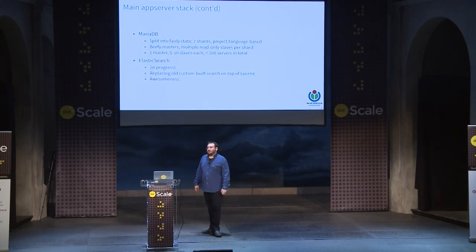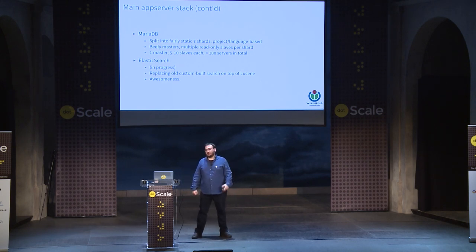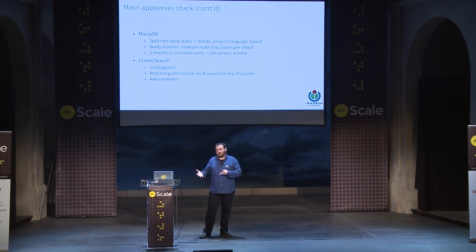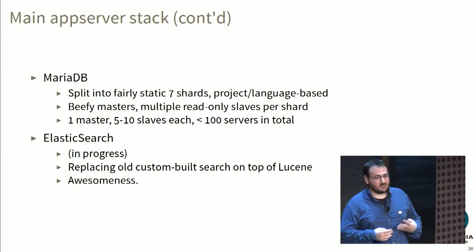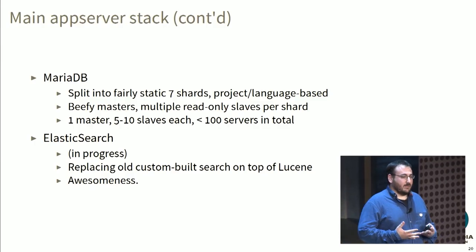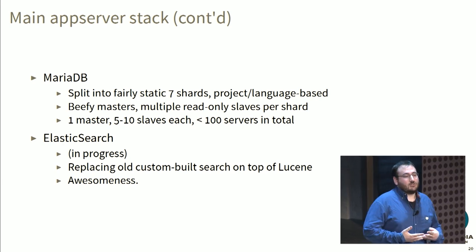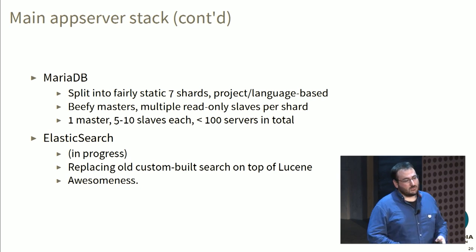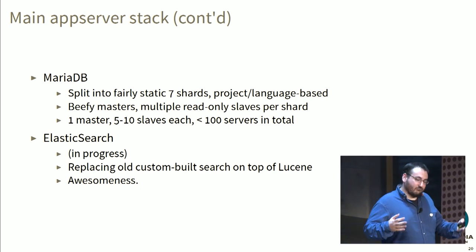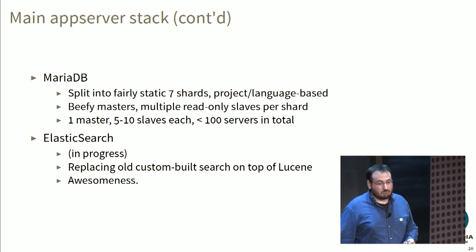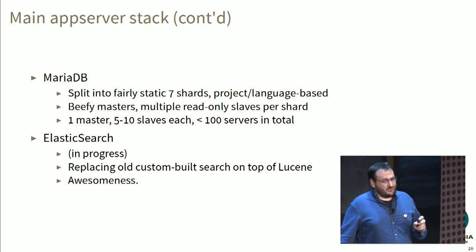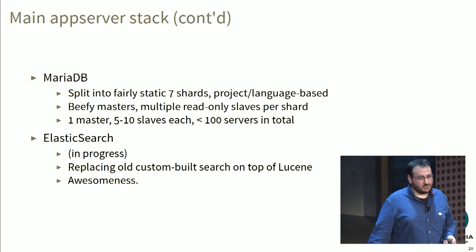On the data store, we have MariaDB. We were using Facebook's MySQL fork and switched to MariaDB last year. We use aggressively read-only slaves to scale up our traffic, with masters handling writes. We split into a fairly static number of shards — currently seven — depending on the language and projects. English Wikipedia is shard one, a few other Wikipedias are shard two, and so on. In general it's a fairly small setup, less than 100 servers.